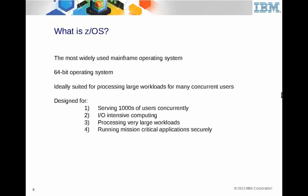The operating system itself is comprised of modules. System information about system resources and tasks are stored in something called control blocks, which I'll talk about later. For management of physical storage, there are three types: real storage manager, auxiliary, and virtual — all for managing memory.